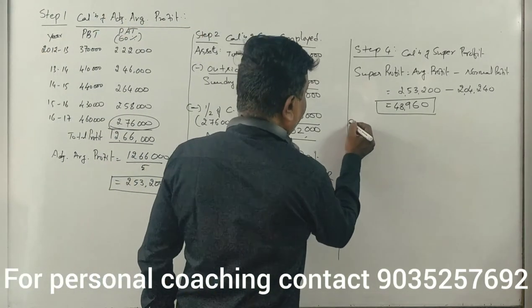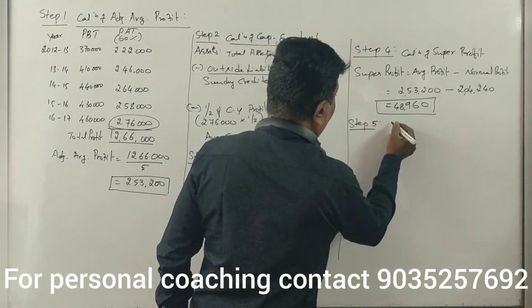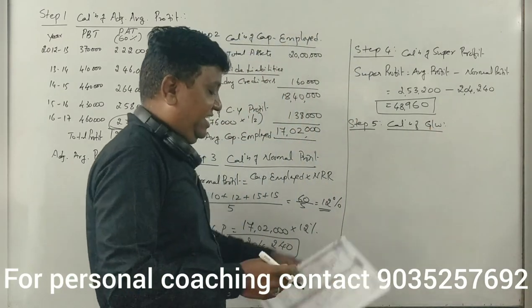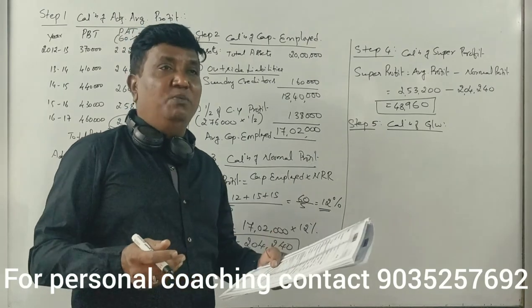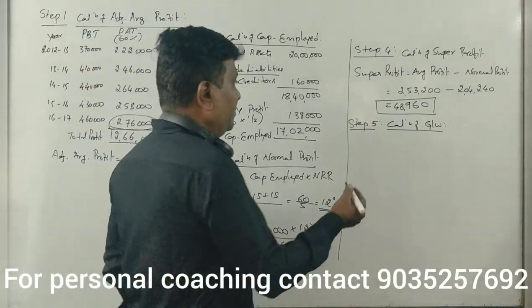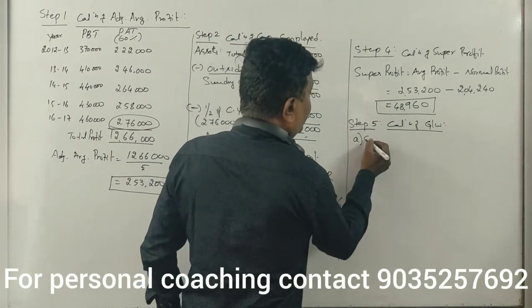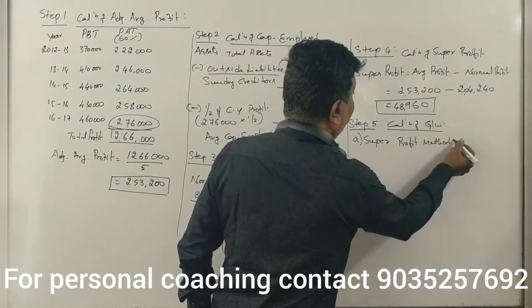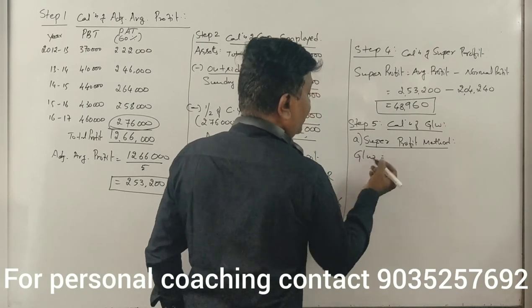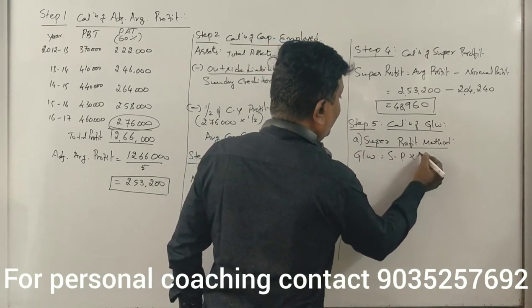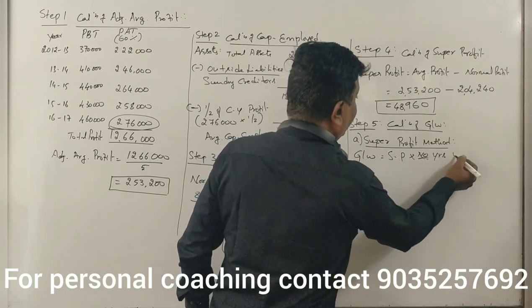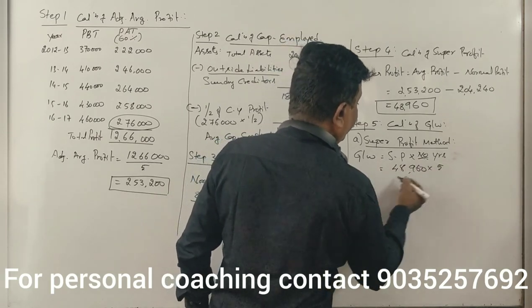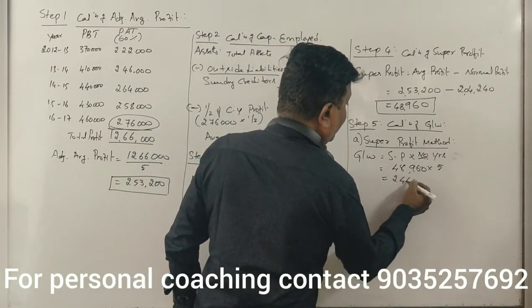Step 5: Calculation of goodwill. Method 1 — Super profit method (5 years purchase): Goodwill equals super profit into number of years = 48,960 × 5 = 2,44,800.